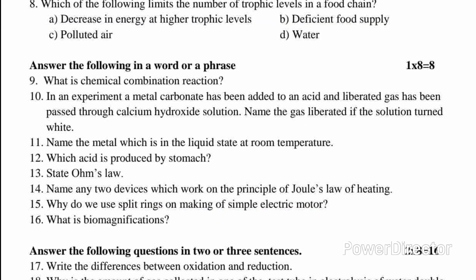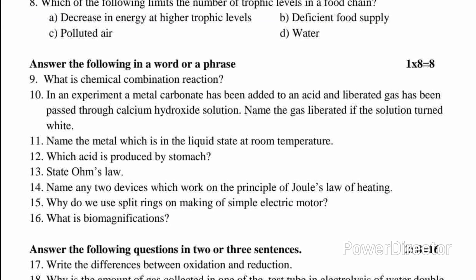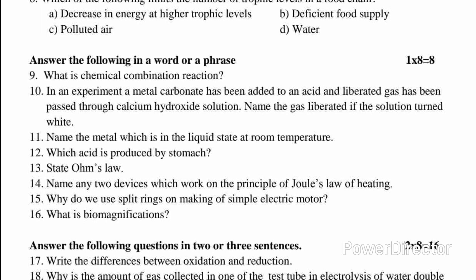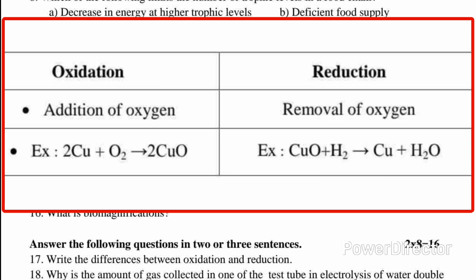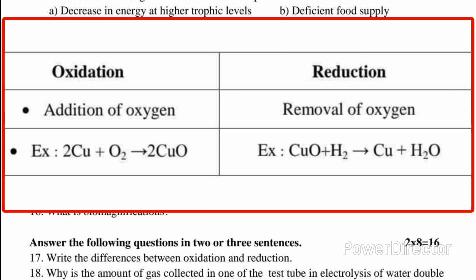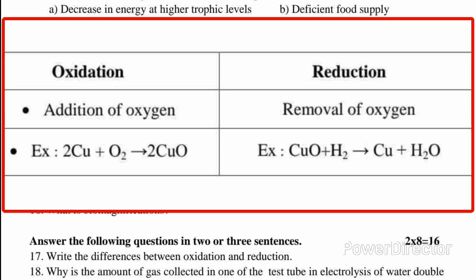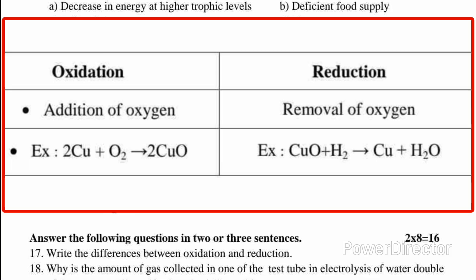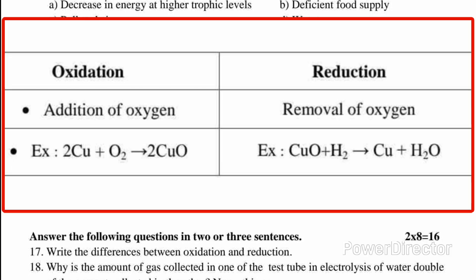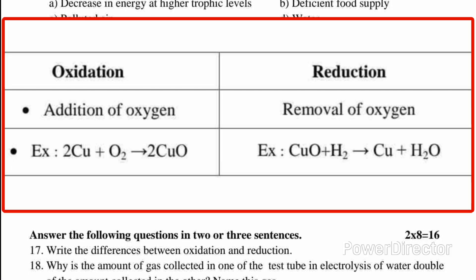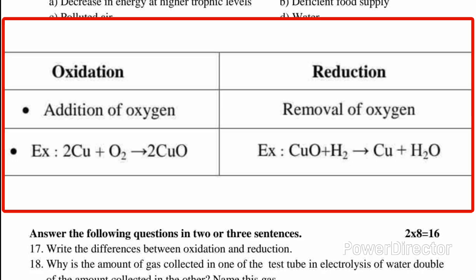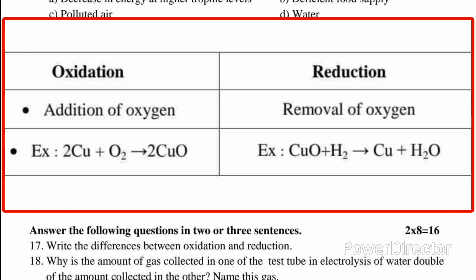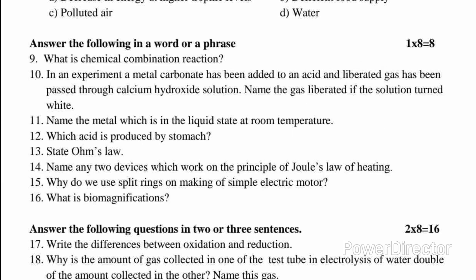2-mark questions. Question 17: Write the differences between oxidation and reduction. Answer: Oxidation — addition of oxygen is called oxidation. Example: 2Cu + O₂ → 2CuO. Reduction — removal of oxygen is called reduction. Example: CuO + H₂ → Cu + H₂O.